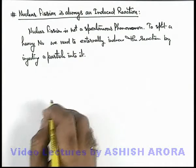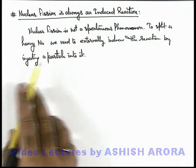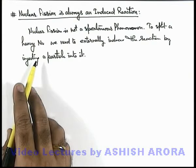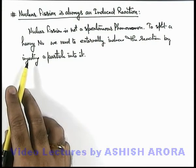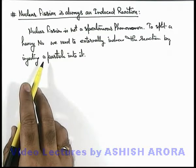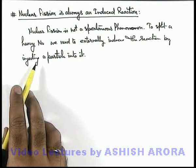Basically, in nature the heavy nuclei that are available are unstable, but not to the extent that they will directly disintegrate into middle weight fragments. Heavy nuclei are radioactive, so gradually through the phenomena of radioactive series these nuclei achieve stability.